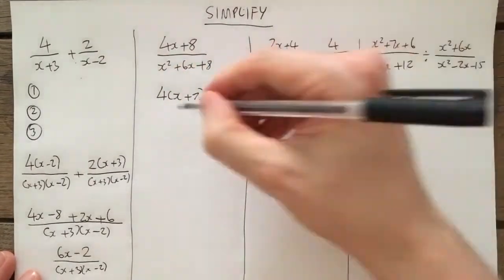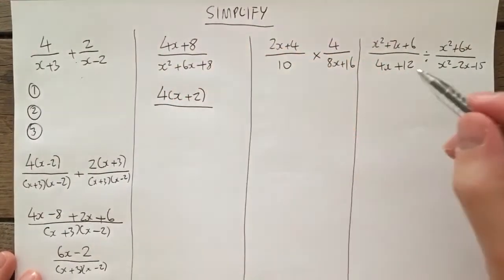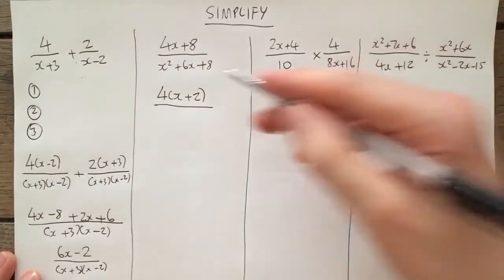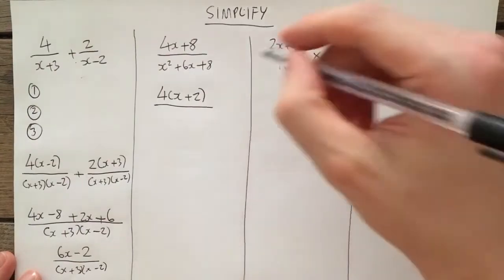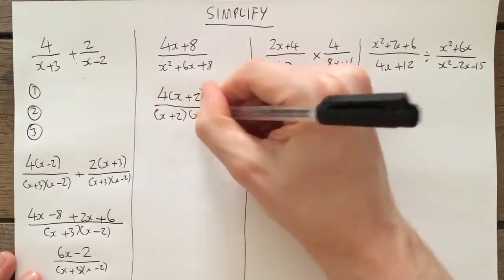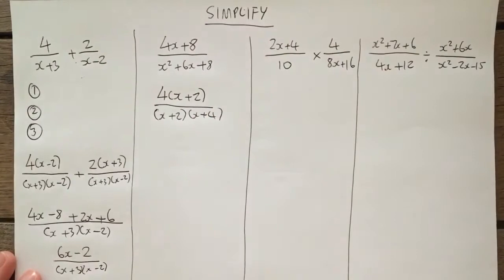The denominator is a linear factorization. 4 comes out. The denominator is obviously a quadratic factorization. Two numbers that multiply to get 8, add to get 6, is 2 and 4. So it'll be x plus 2 and x plus 4.